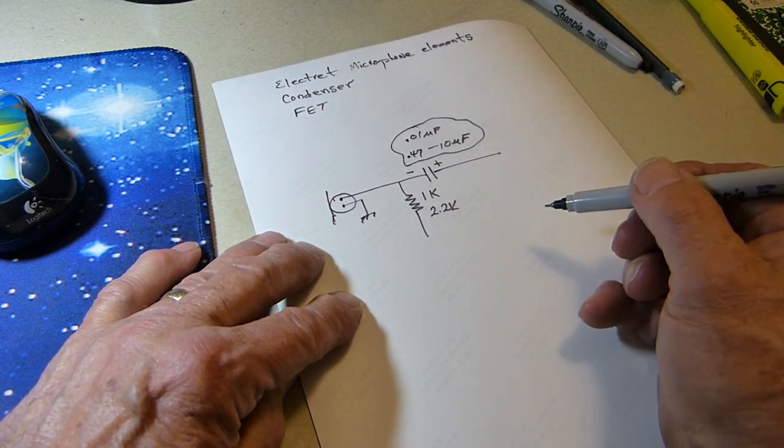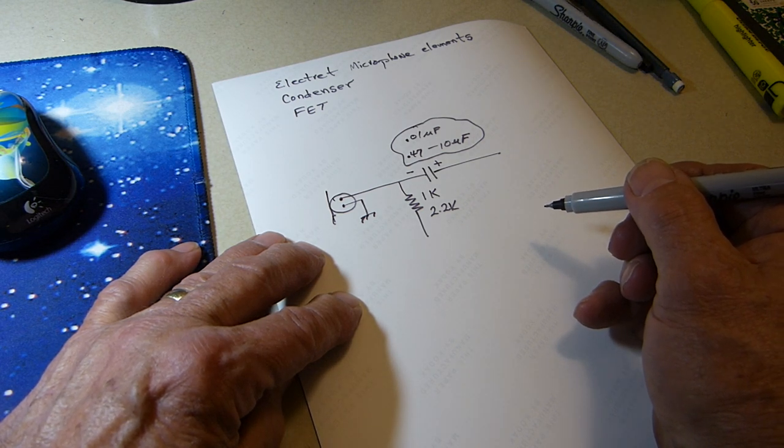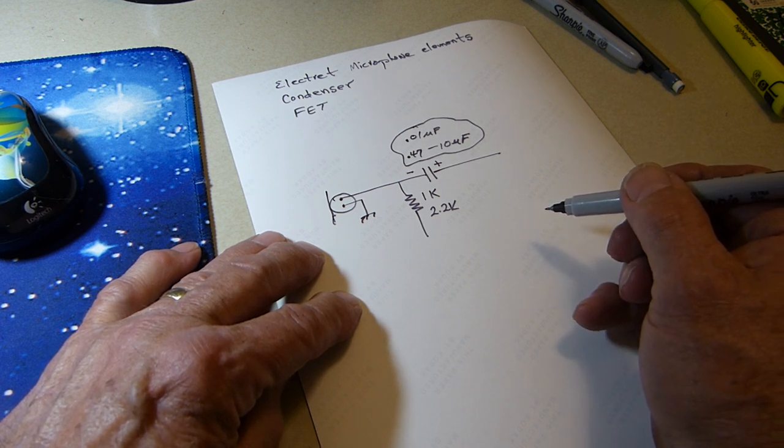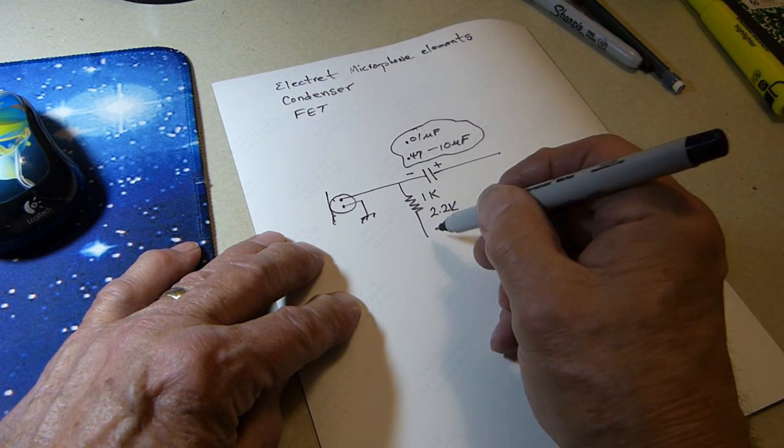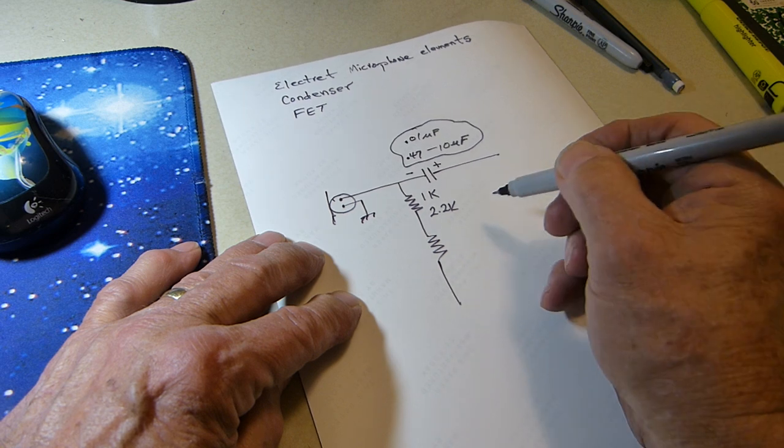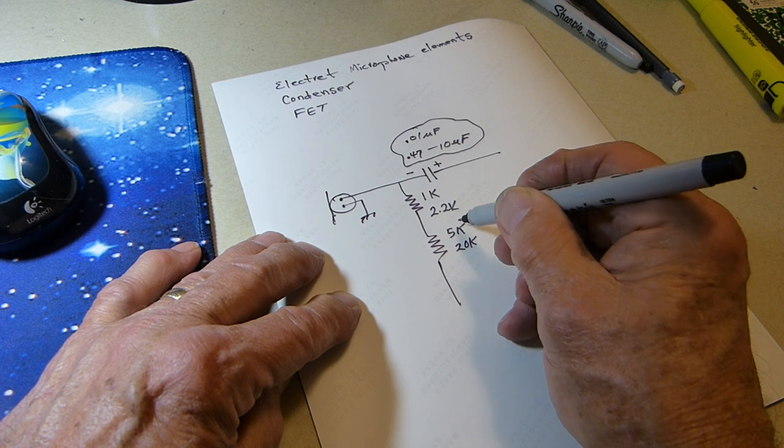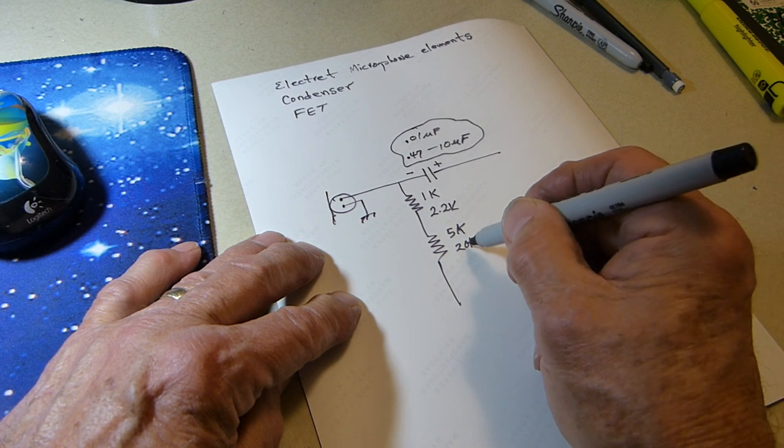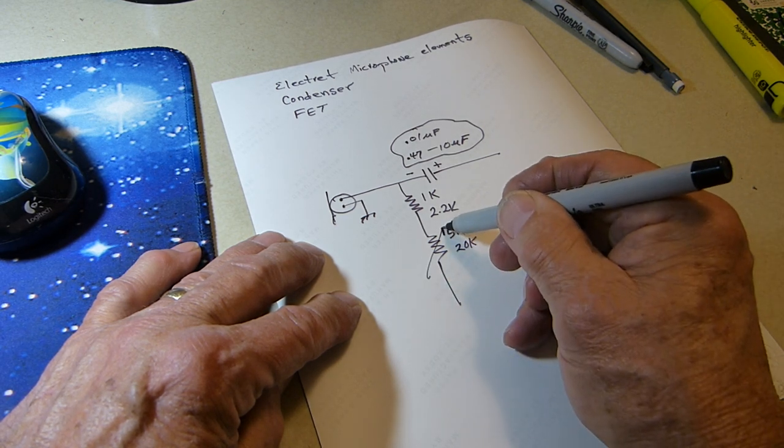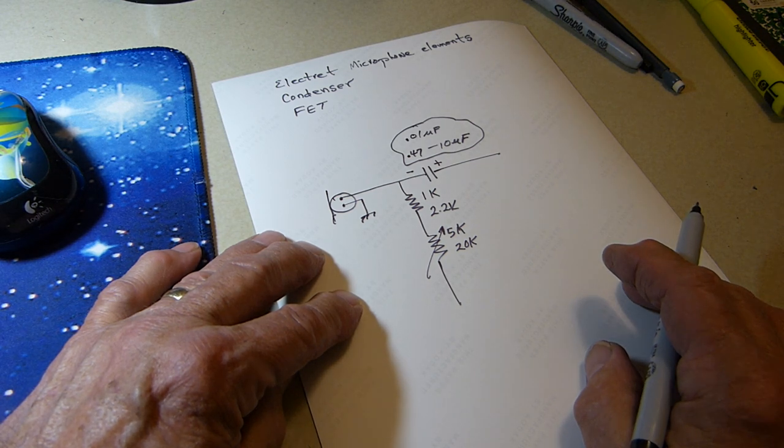You can change this resistor to any value you want. I don't know how high you can go - probably 20 or 30k ohms. The way I've done it that has worked very well is I just put another little pot in series with it. I've used 5k and 20k, and the higher it is, the more gain you get. This is a potentiometer.